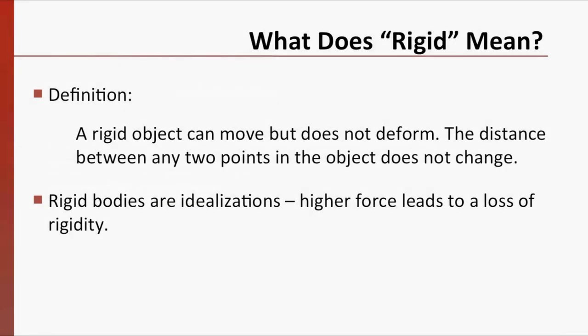This is made easier by the concept of a rigid body. Rigid bodies can translate and rotate, but they do not bend, stretch, or twist. In mathematical terms, the distance between any two points in the object does not change.